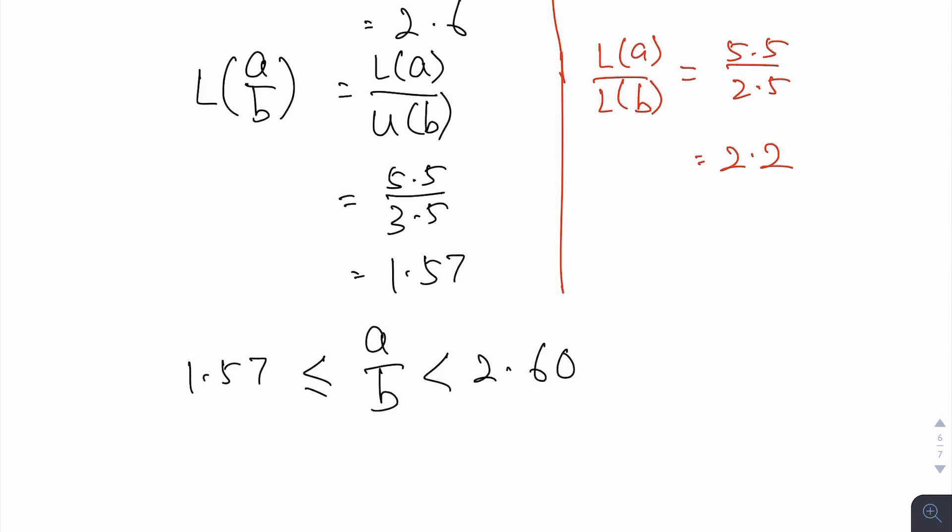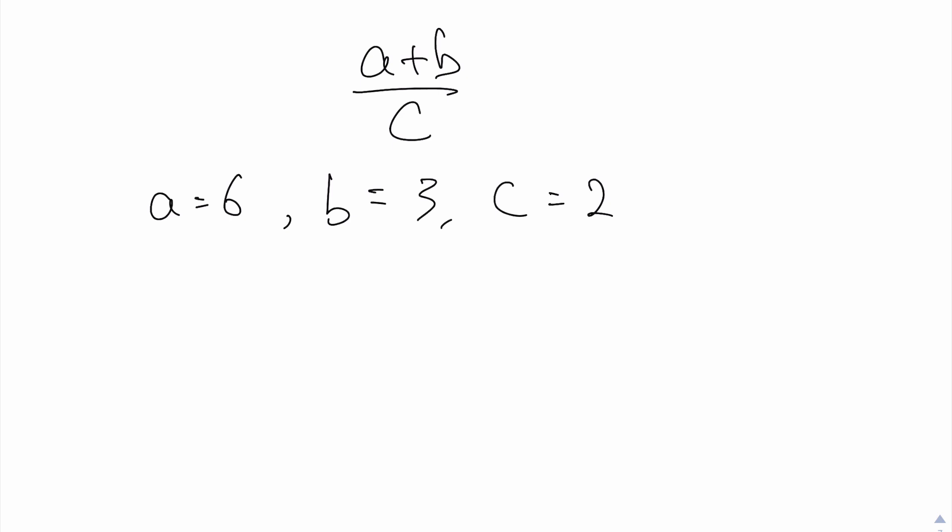I hope this video clarified the concept of how to find the upper and lower bounds of a combination of two variables. Before we close, I'll give you one more example: (a + b) over c, where a equals 6, b equals 3, and c equals 2. Pause the video and give yourself some time to work through the answer.